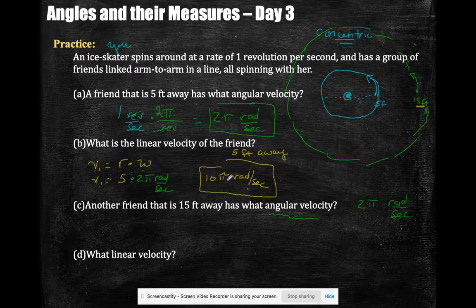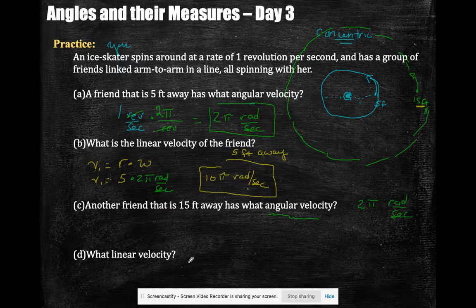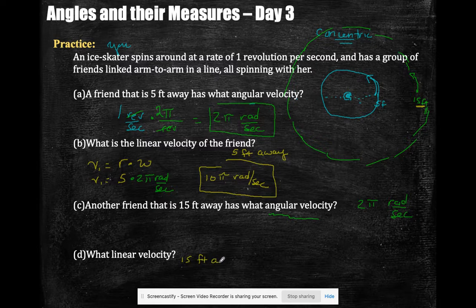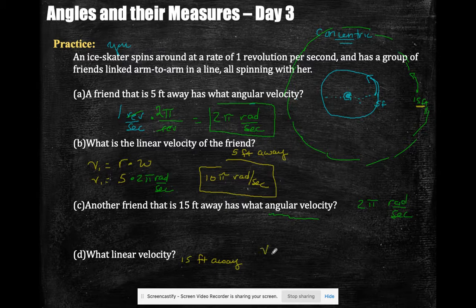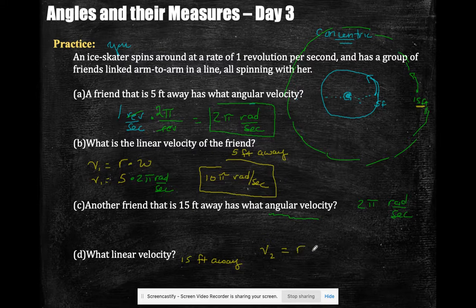Would you expect this linear velocity to be greater or less than the friend who is 15 feet away? It's nice to kind of think about that going in. So the second velocity is the new radius times the same angular velocity.